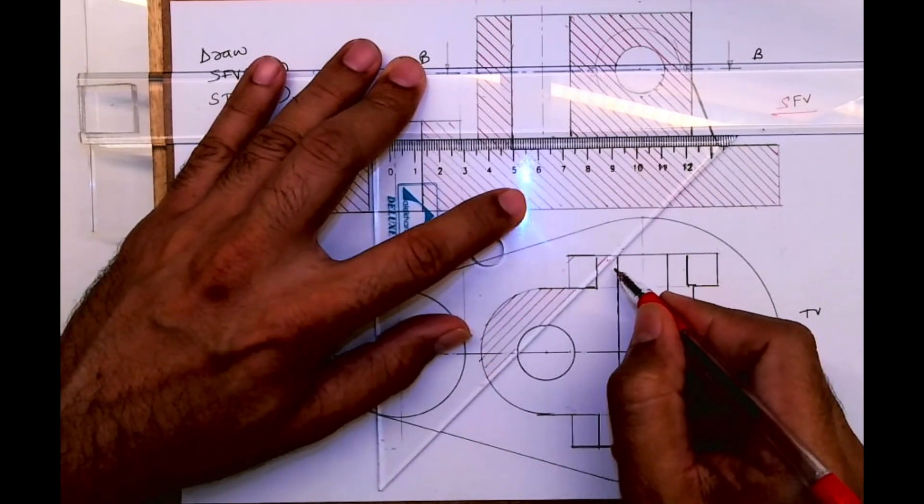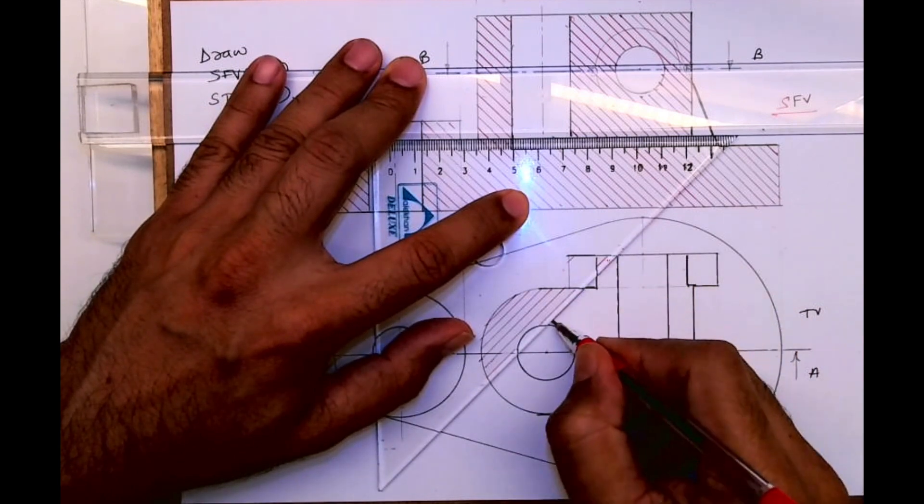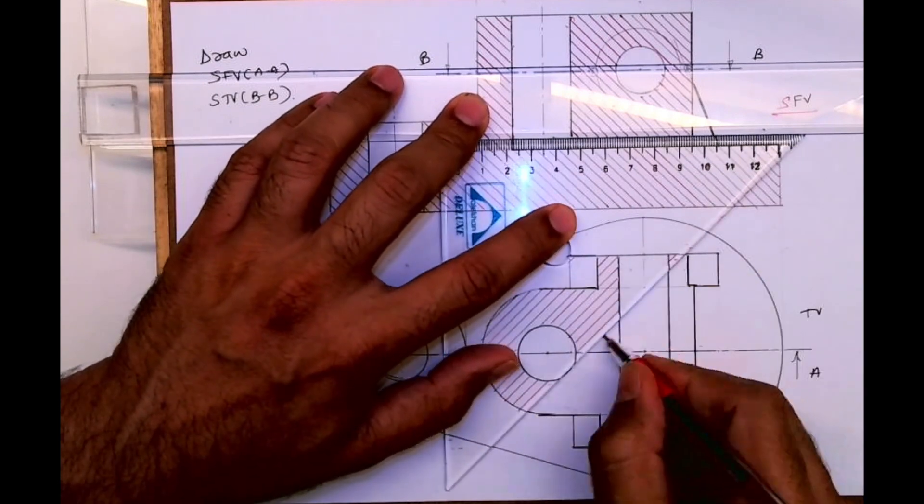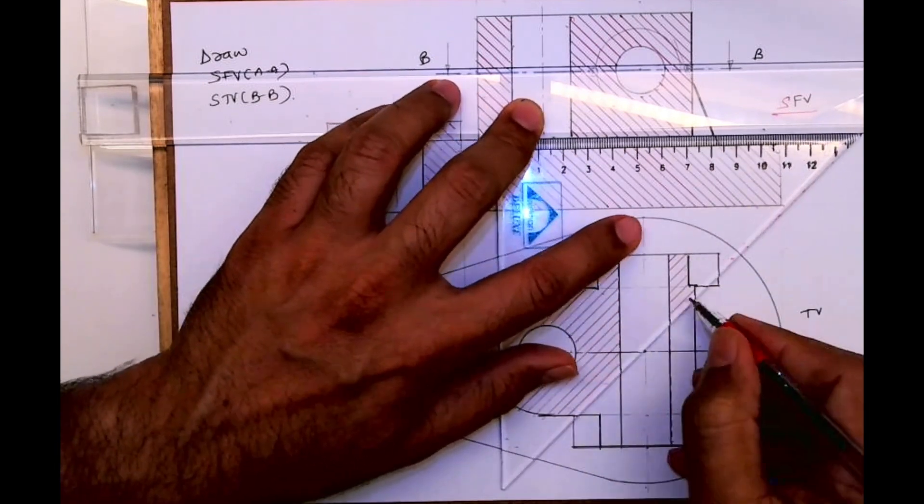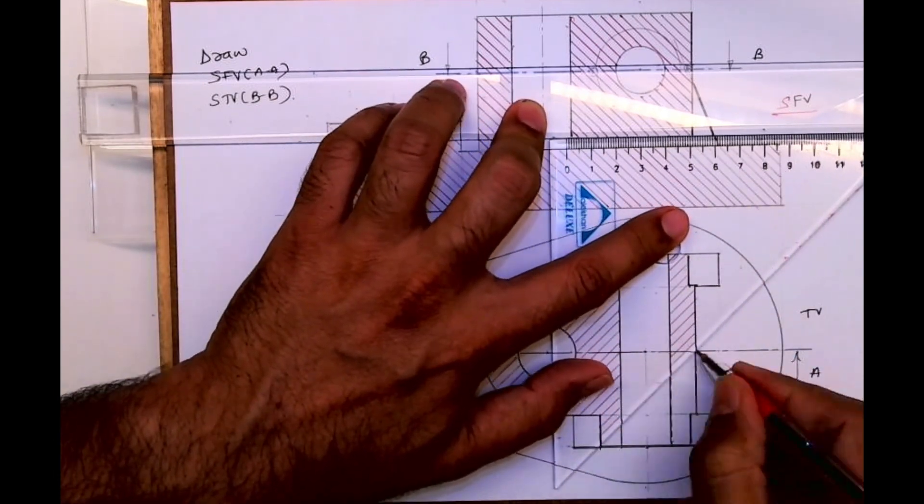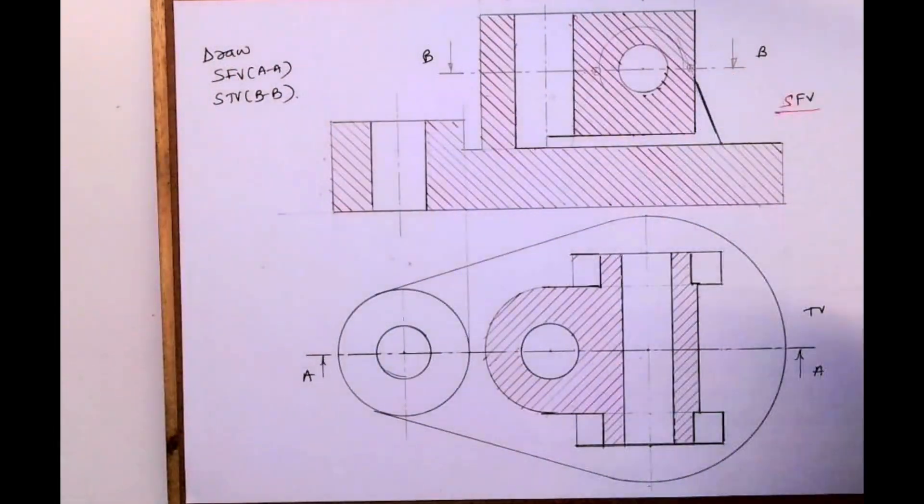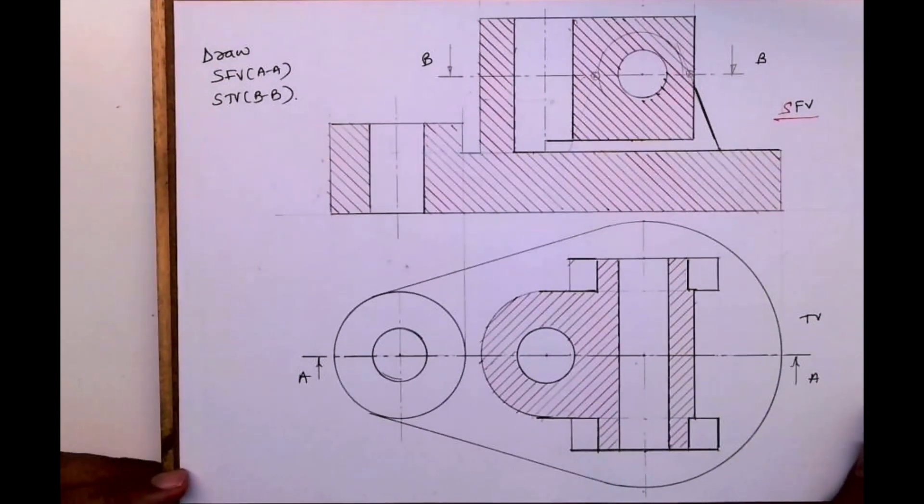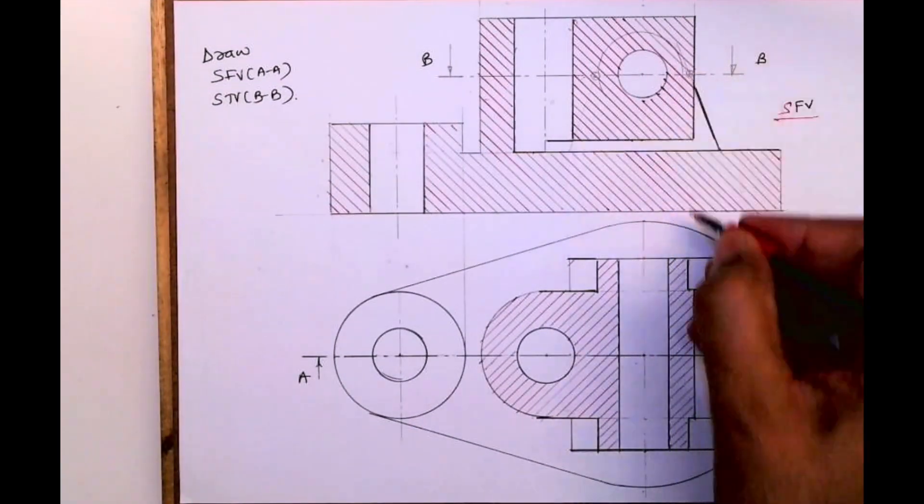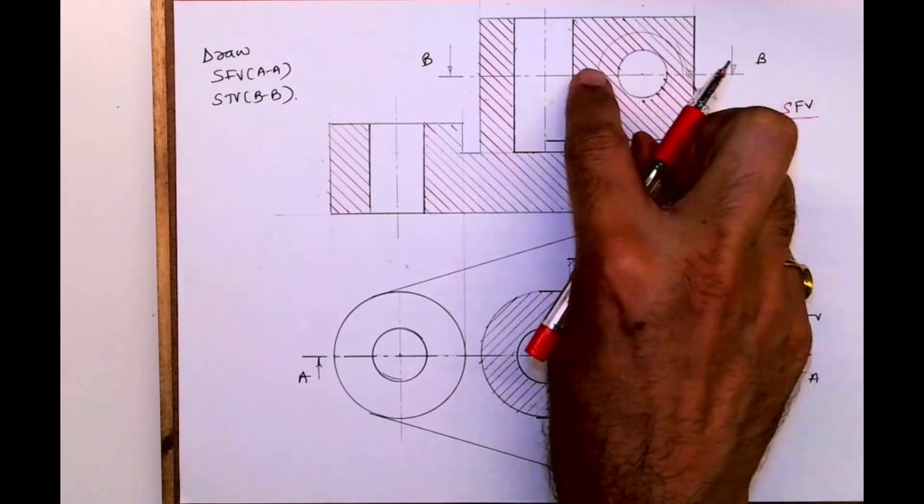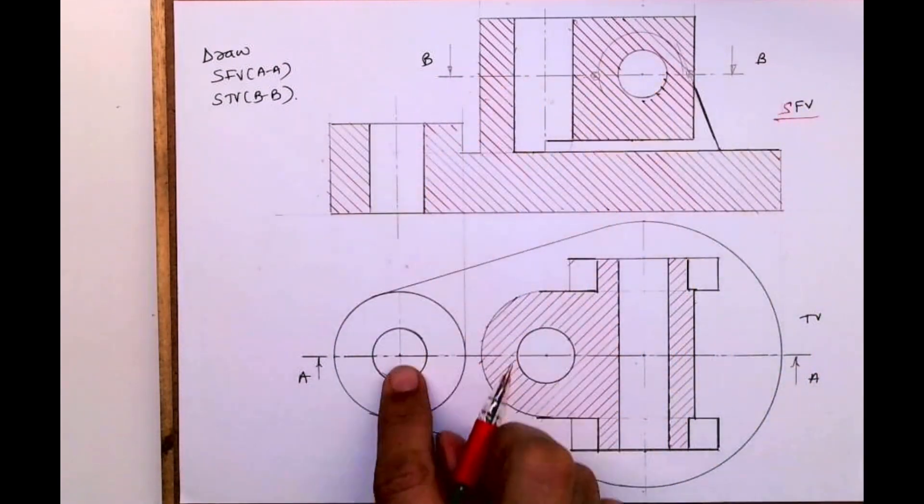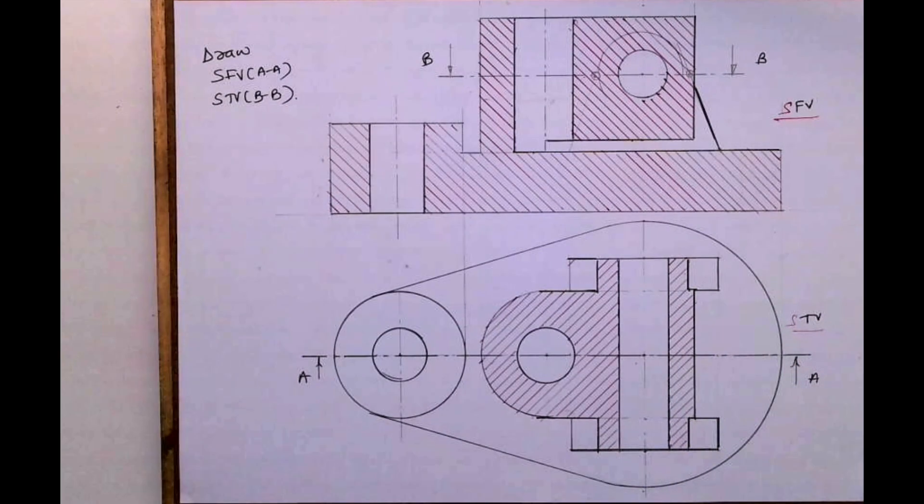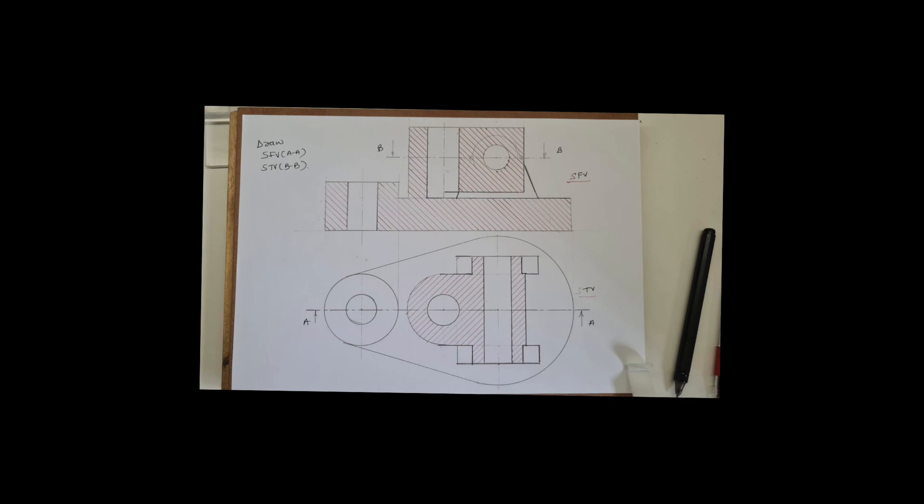See, this portion will be cut, so that will be hatched. This way we'll do this hatching. Remember to project properly to get that part in this portion. So we are done with sectional top view. I hope you people have understood this. Thank you.